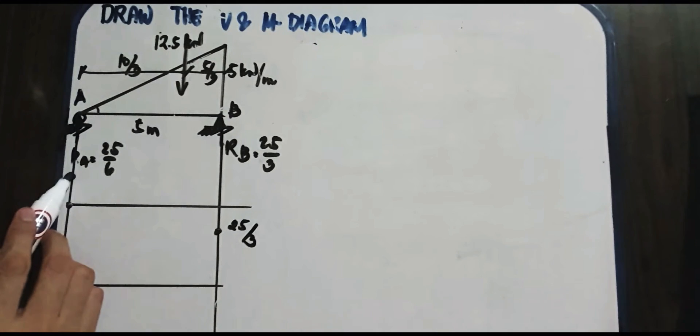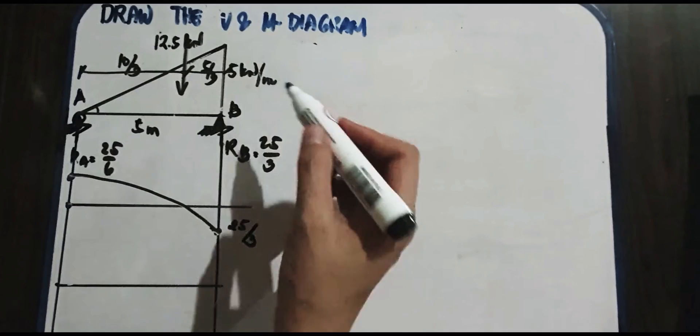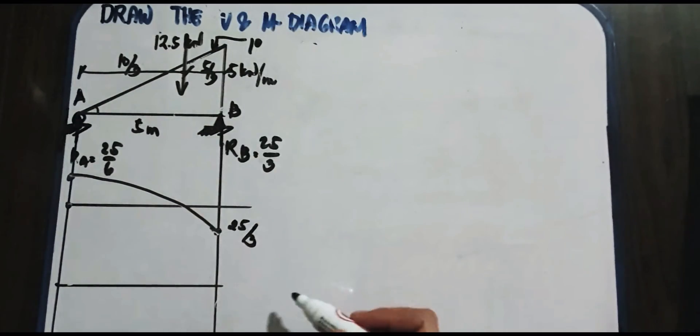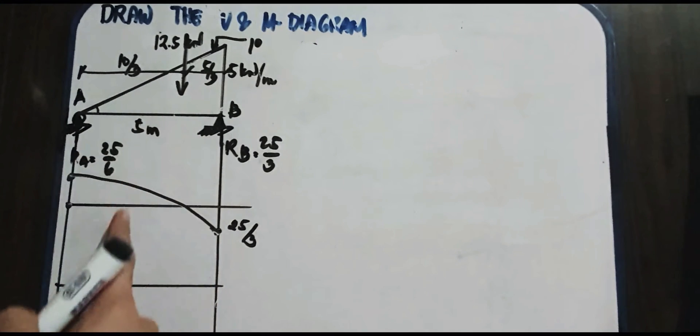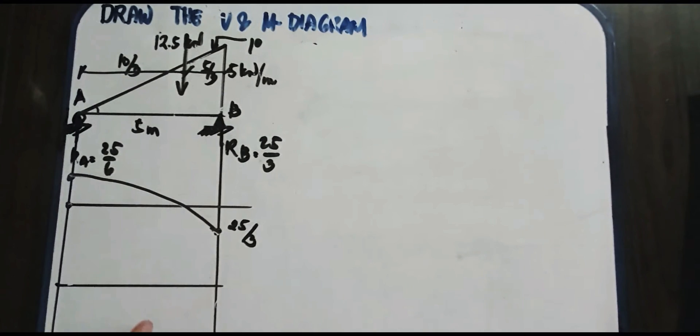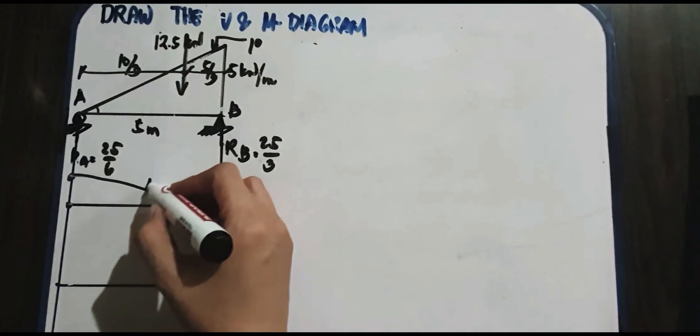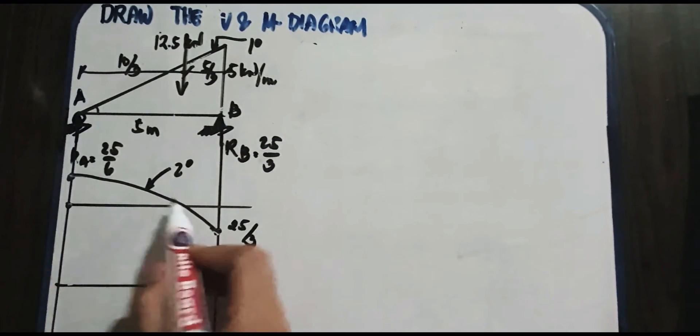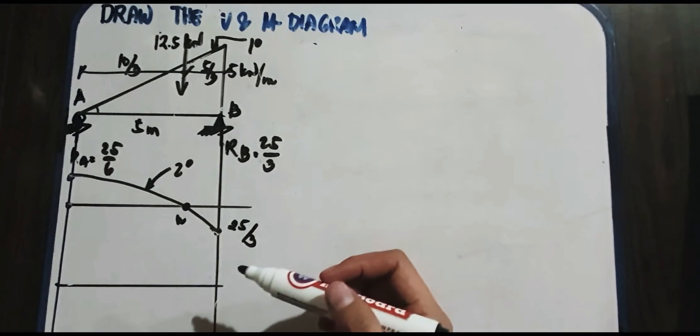So ito, pag ginawa natin yan, that is 2 degrees. Bakit 2 degrees yan? And this is 1st degree. So therefore, kung area load is 1st degree, therefore, ito namang area shear natin is 2nd degree. Therefore, yung moment natin na diagram is for the 3rd degree. So spandral na po yun. So we have to know the n. So paano yung n natin? Ipa-plot lang natin yan.